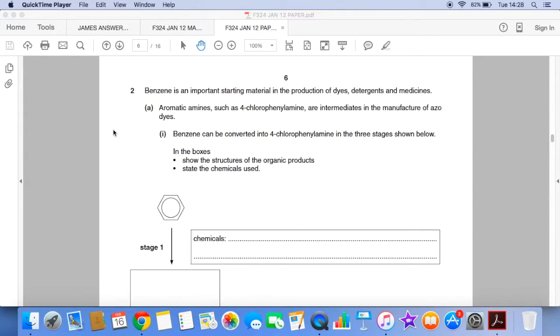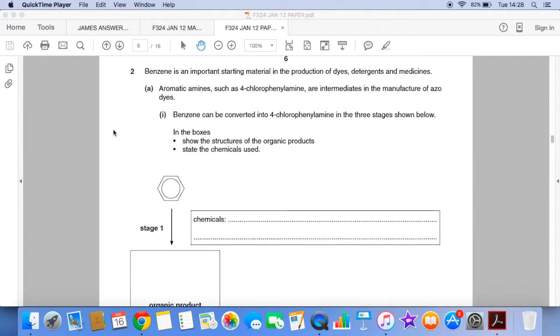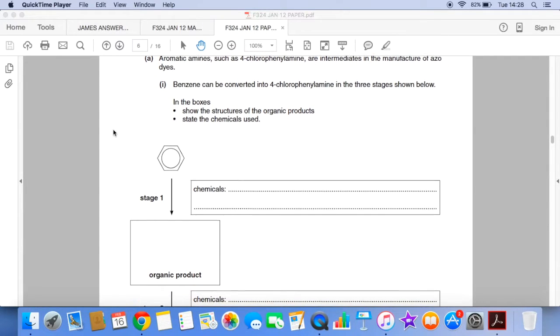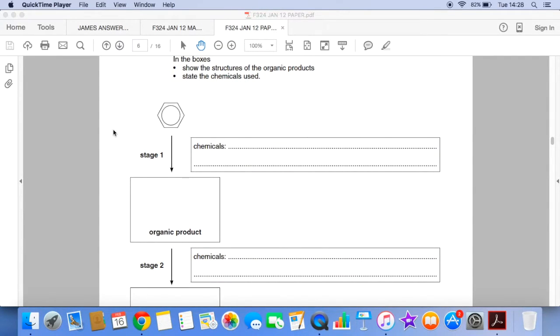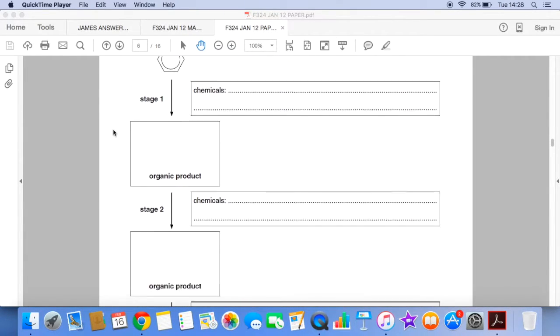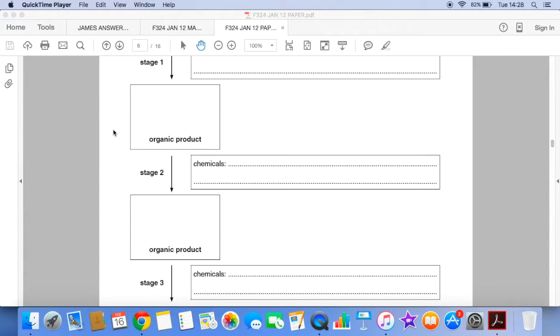So the first part is a synthetic route starting from benzene and going to 4-chlorophenylamine in three stages. So you've got to come up with the chemicals for the three stages and two organic products that will be formed on the way.